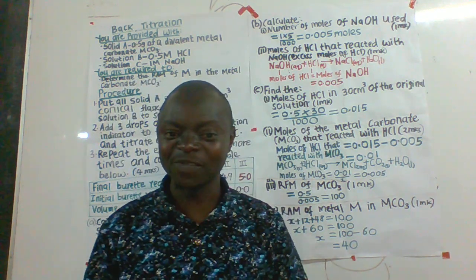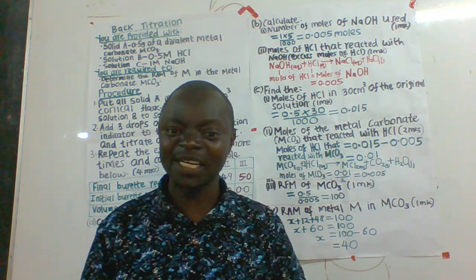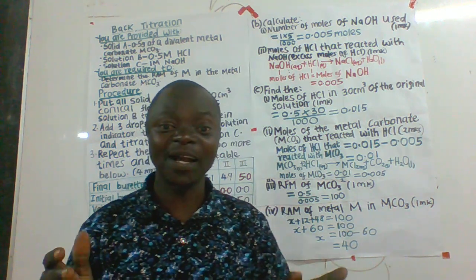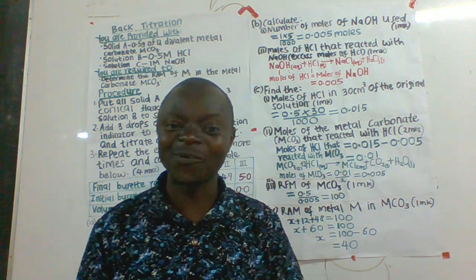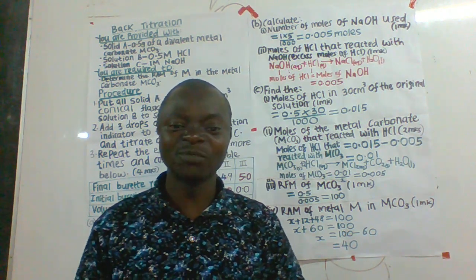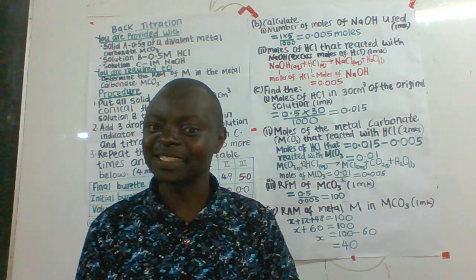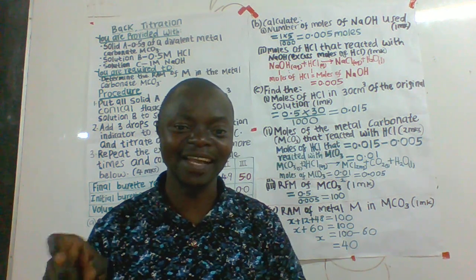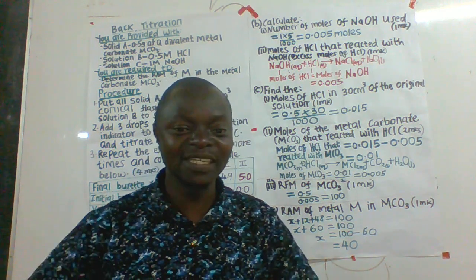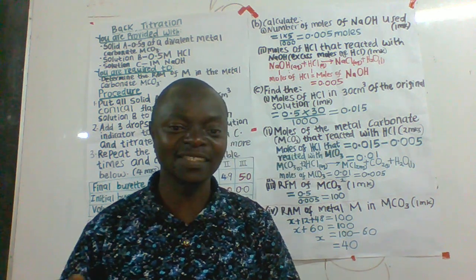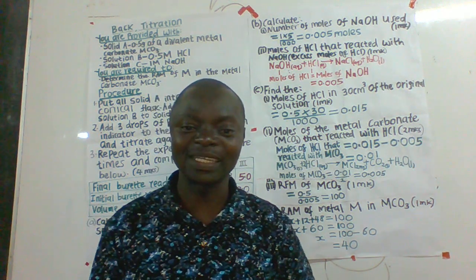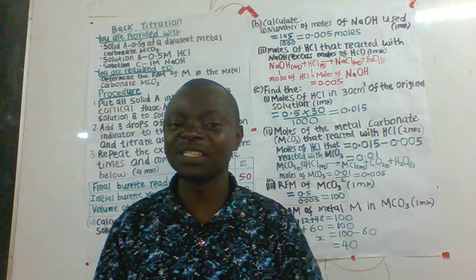Back titration actually involves most of the time three reagents. For example, you have a carbonate in solid form, then you have an acid like hydrochloric acid, then you have a base, and the concentrations of the acid and the base are known. Most of the time you will be asked to react the solid carbonate with an excess acid so that the carbonate reacts with part of the acid and you get a solution. The resulting solution is then titrated against a base, which reacts with the acid that did not react with the carbonate.